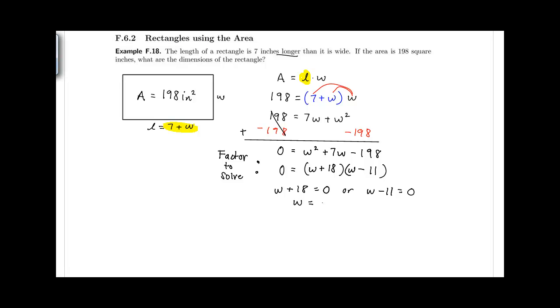Solving for W, W equals negative 18 or W equals positive 11. Now, we know that this is a rectangle and we're talking about area and length, and length cannot be negative. So we would go ahead and omit the negative width that we obtained and have only a width of 11.